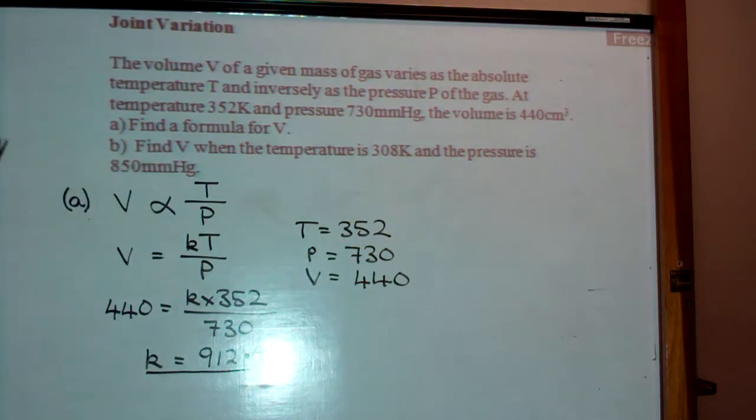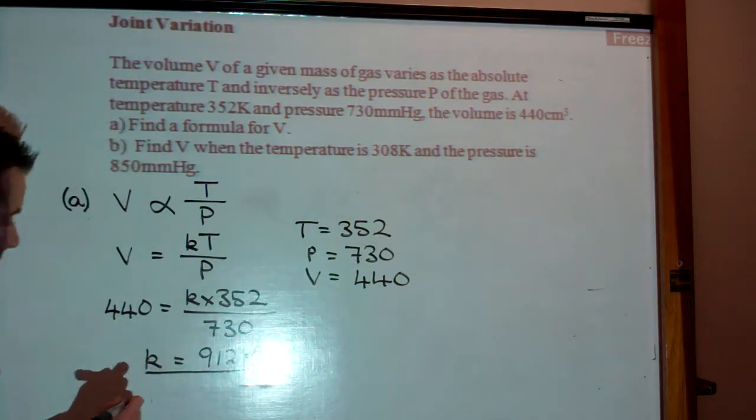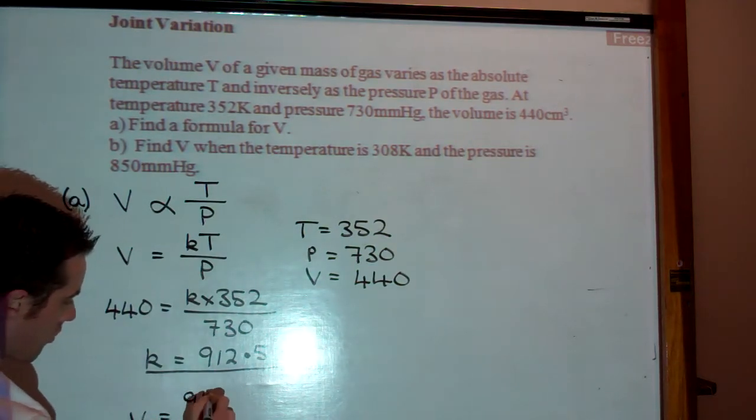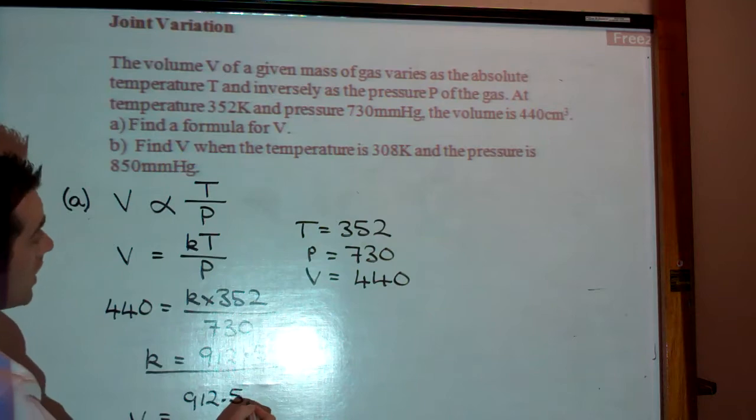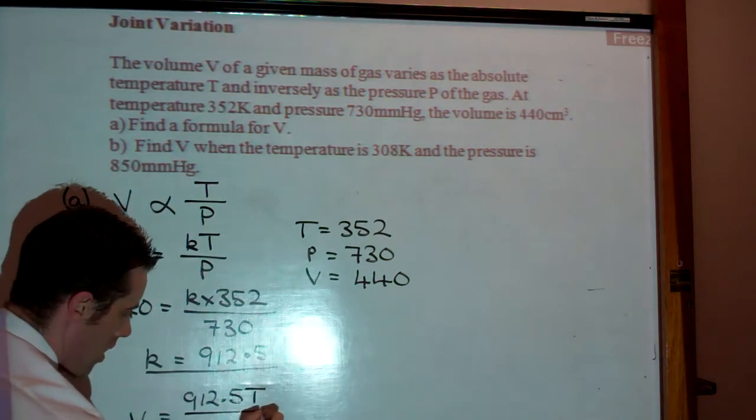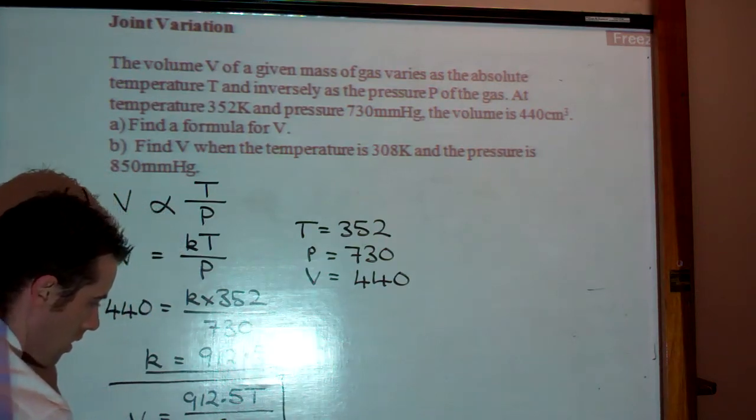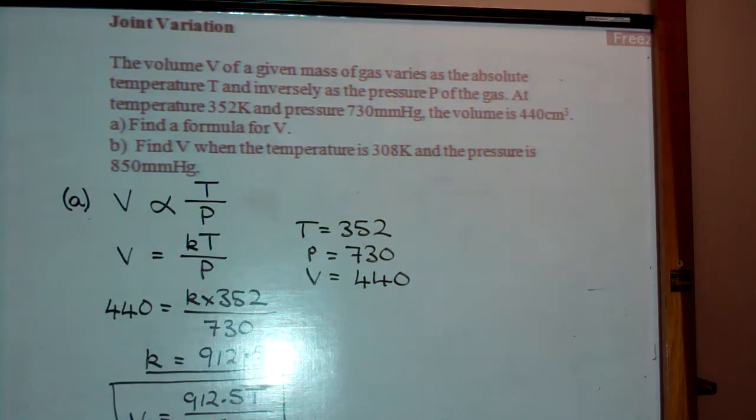So that is our constant. Alright, so our formula then is simply going to be V equals 912.5 times temperature all over P. So here we have a formula.